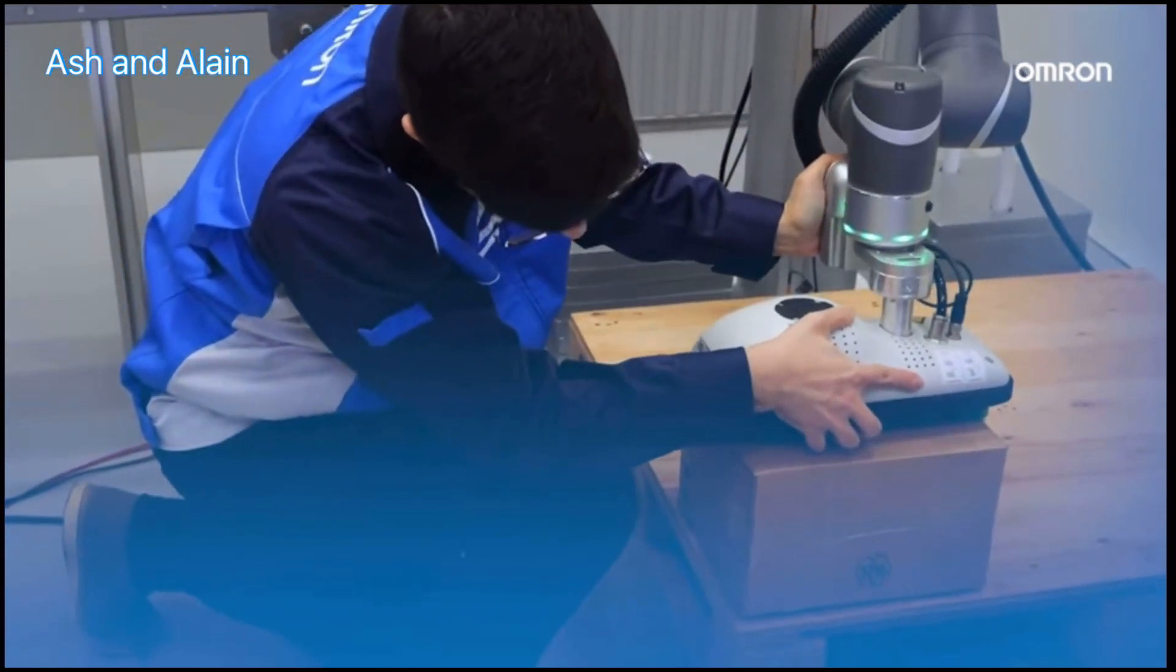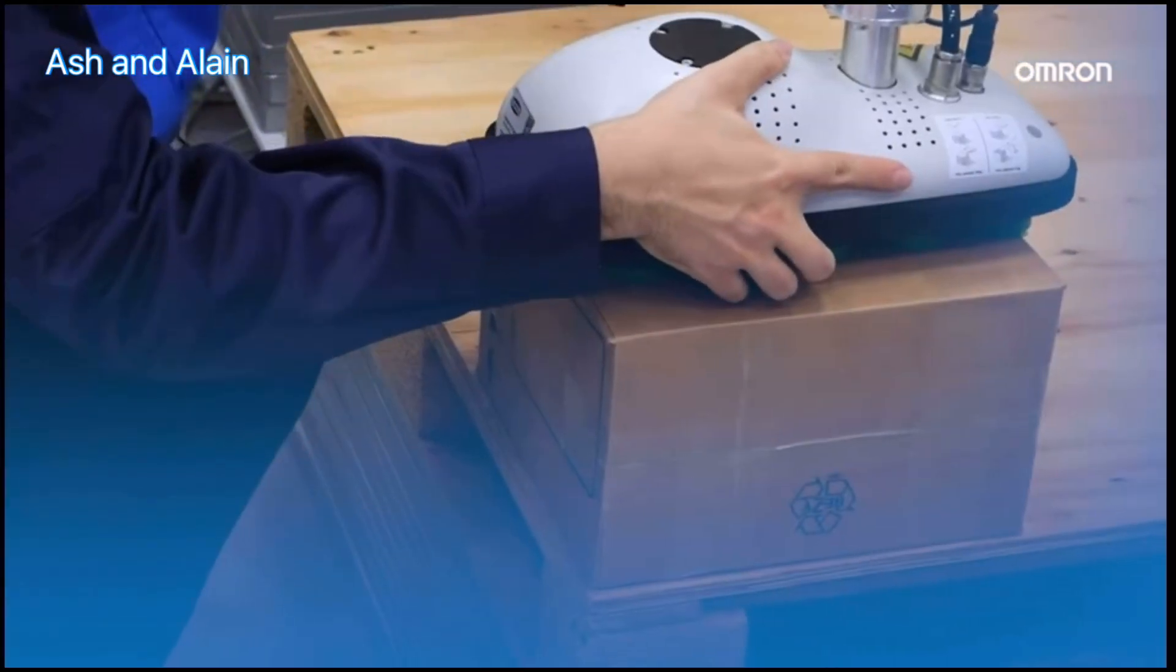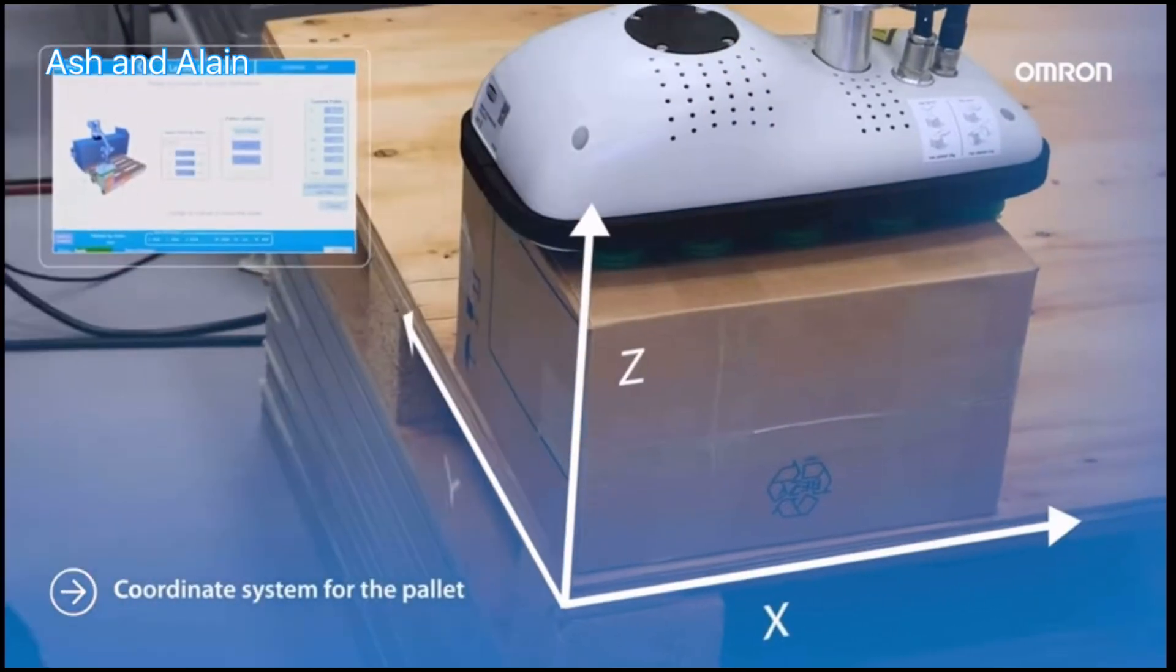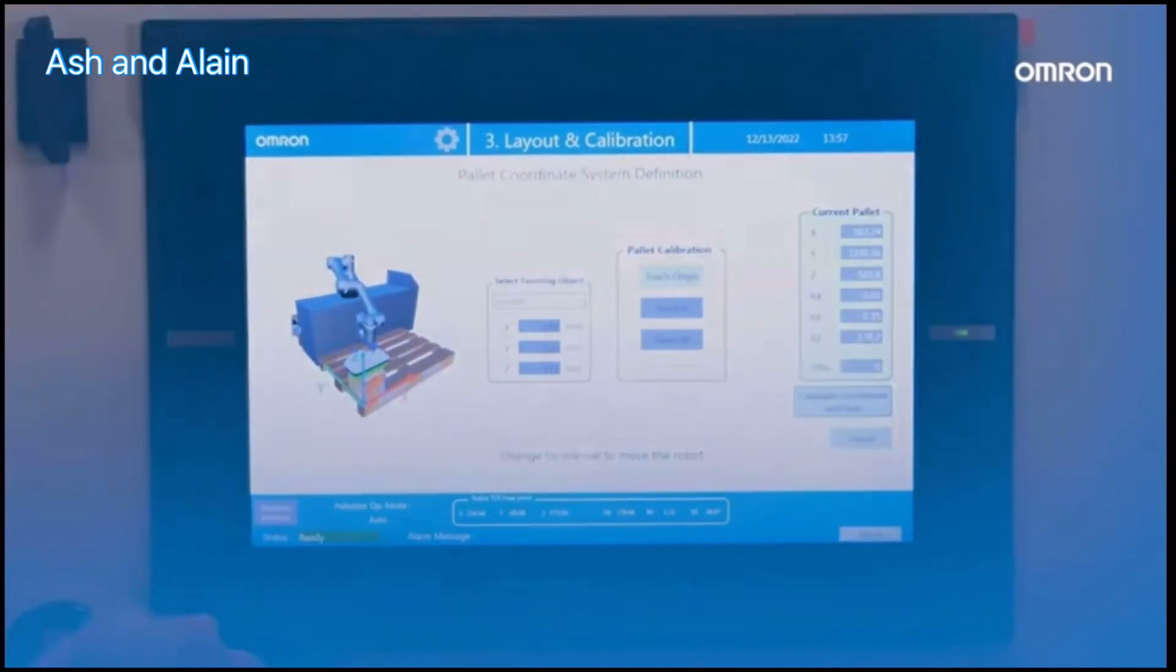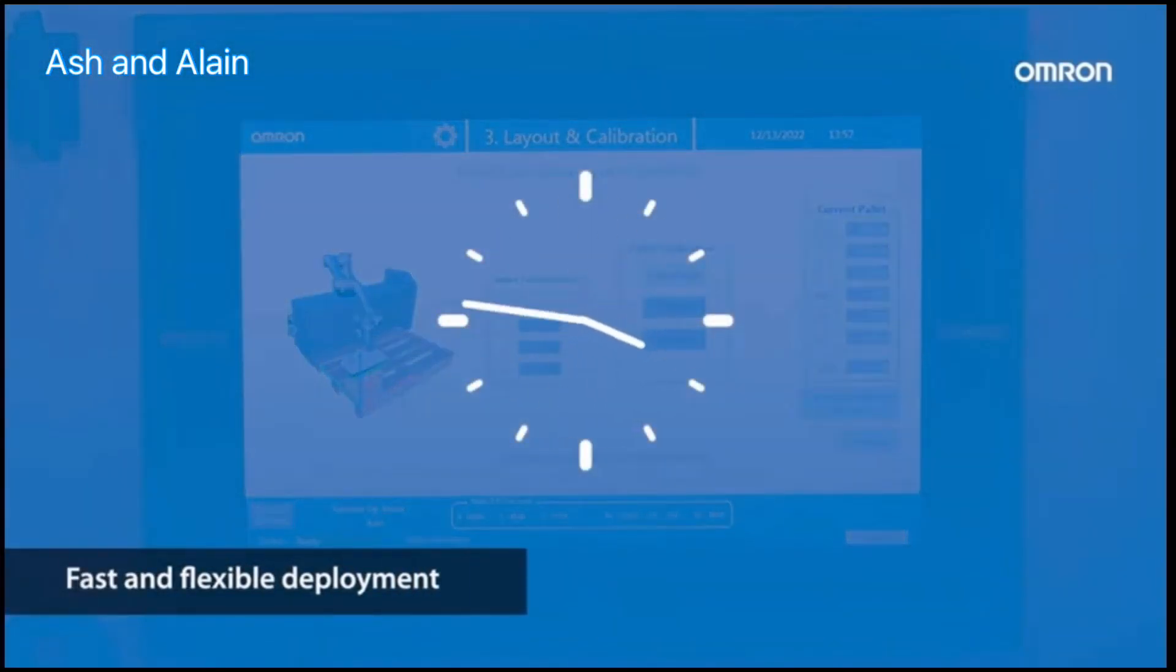We need to reference the pallet with the boxes. How do we do that? Setting the coordinate system for the pallet. The COBA trajectory teaching and the pallet coordination setting system provides fast and flexible deployment.